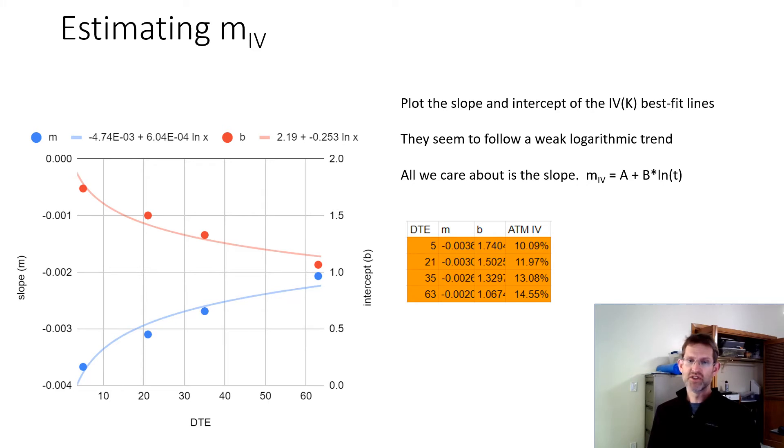So instead of a linear trend, I assume a logarithmic trend. So all we really care about here is the slope, actually. So you can ignore the intercept or the red line.